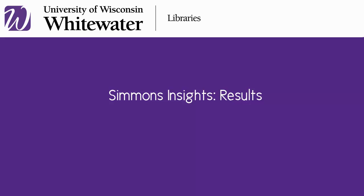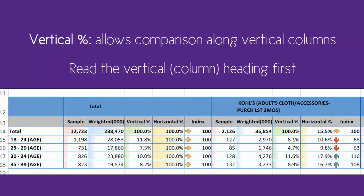Simmons Insights Results: Vertical and Horizontal Percentages. The vertical percentage allows you to make comparisons along the vertical columns. To understand it, you start reading at the vertical column heading, then apply the criteria from the row.